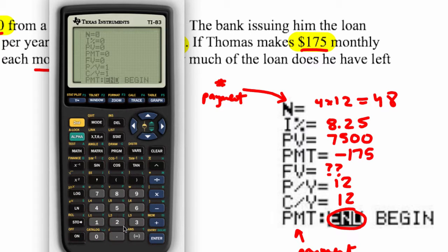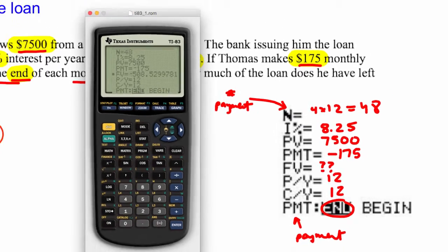Second, finance. We pick number one. N is 48. The percentage is 8.25. The present value is 7,500. The payment is negative—I've got to use that button down there—175. I'll leave that at 0. 12, 12. This should be at end, and it is. I go back up to future value, I hit alpha, I hit enter, and it tells me it's a negative amount because that's not money in your pocket, that's money that's owing. The amount is $508.53.